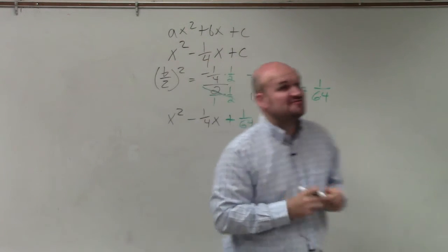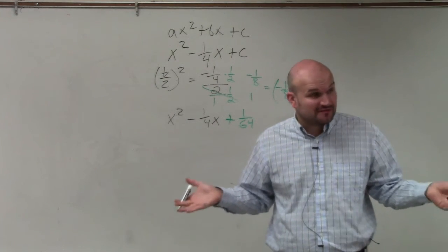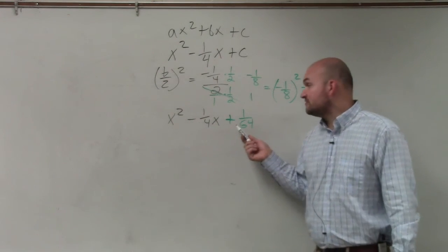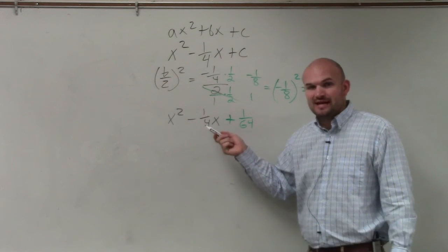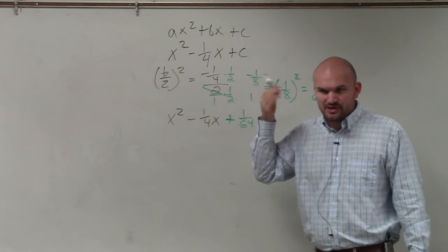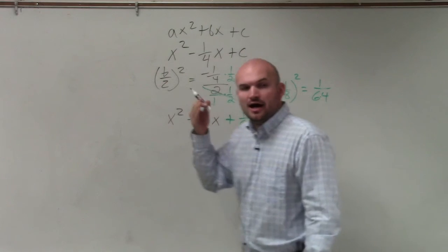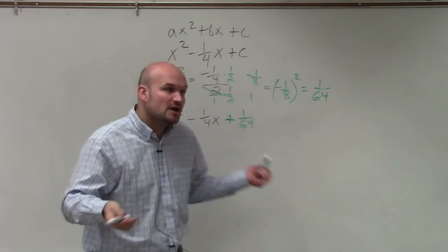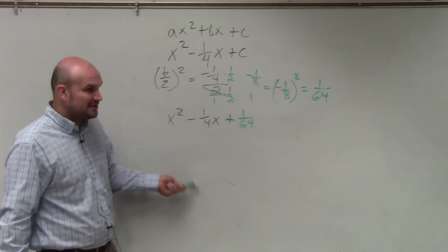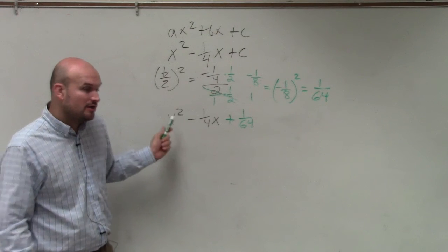So I have x squared minus one fourth x plus one over 64. Now, as far as factoring goes, this could be probably pretty difficult to factor. What two numbers multiply to give you one 64, and then add to give you negative one fourth? That might not come to your head, especially with your trouble with fractions. So a lot of times, if you're having trouble factoring it, but you know you created a perfect square trinomial...